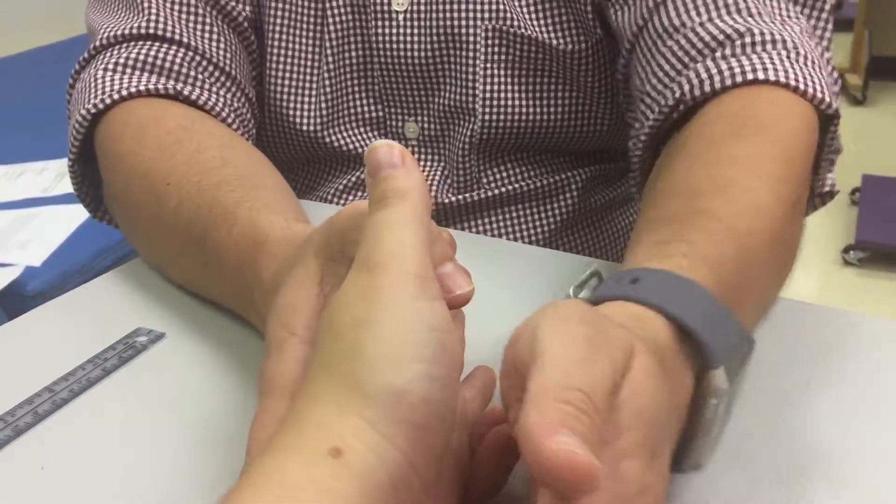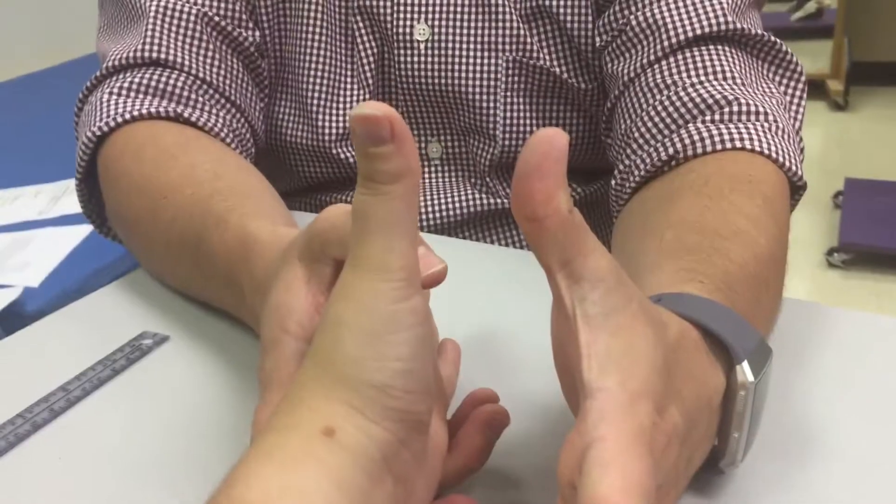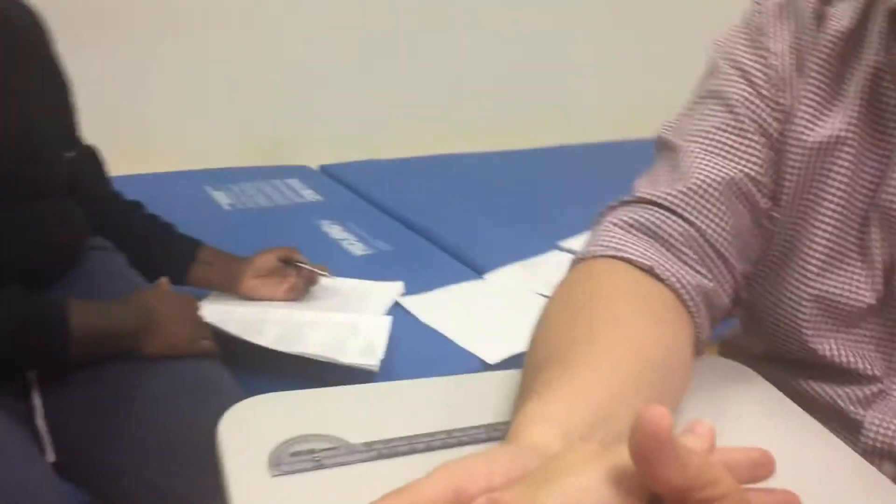So thumb CMC extension. I'm going to see if she can bring her thumb all the way up like this. Good. And then relax. So she can go through the full range and she can sustain it, so she's a three.